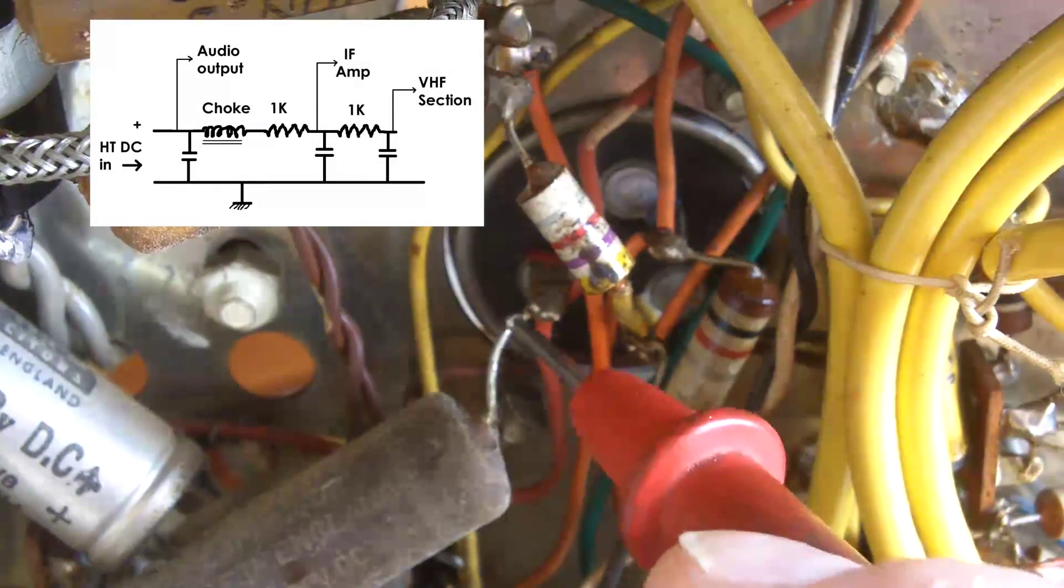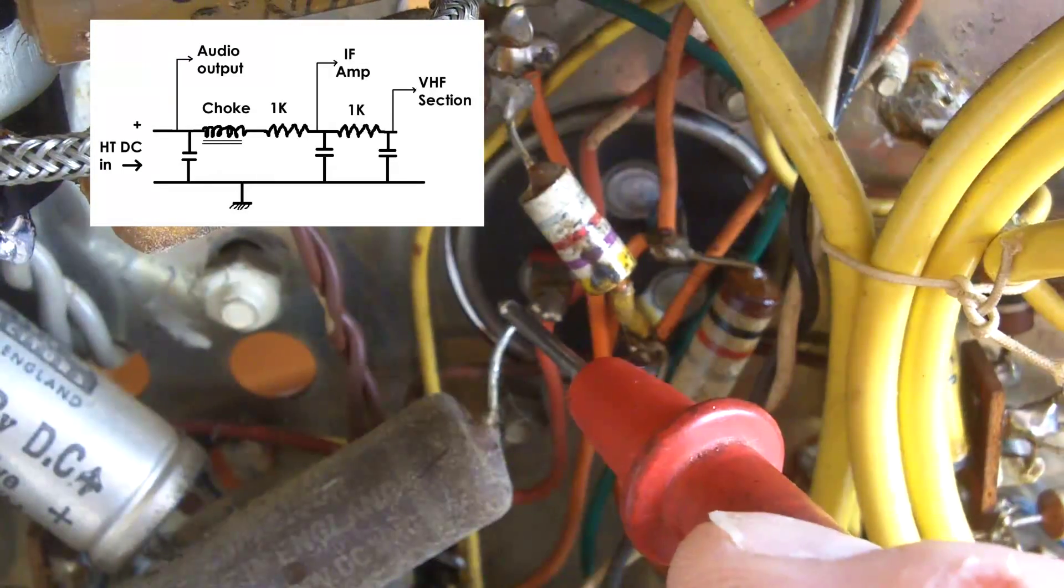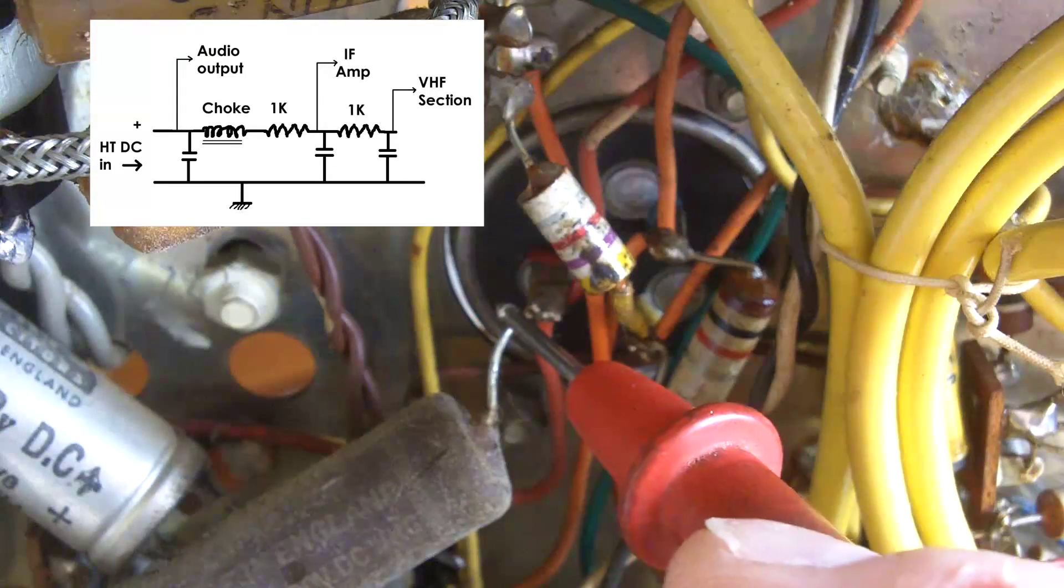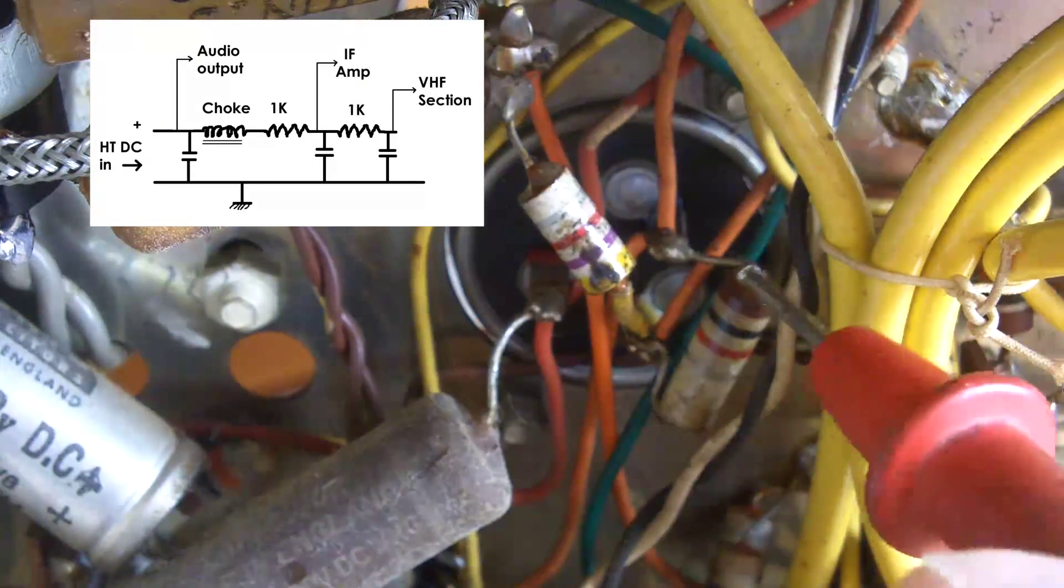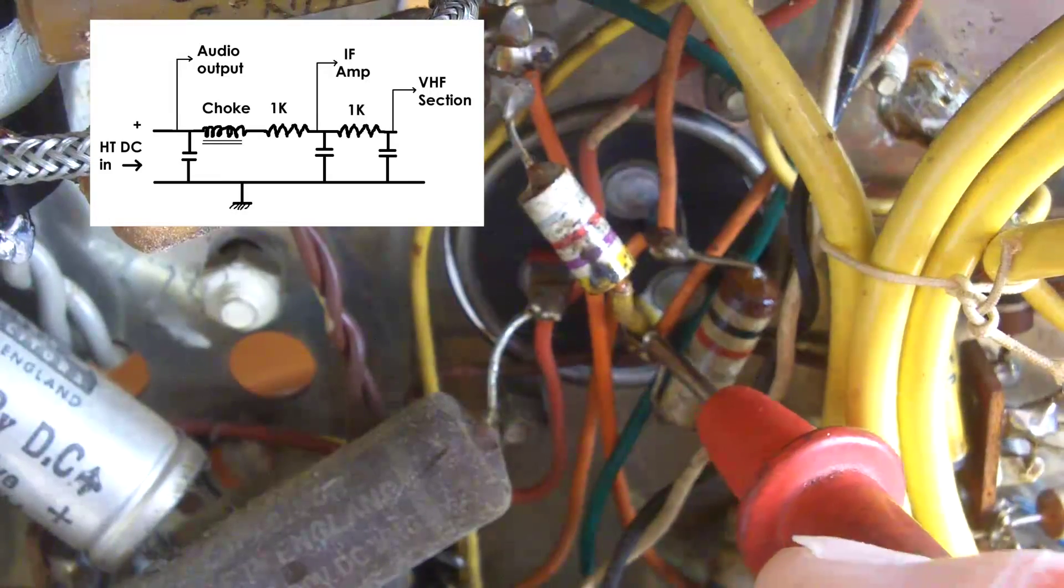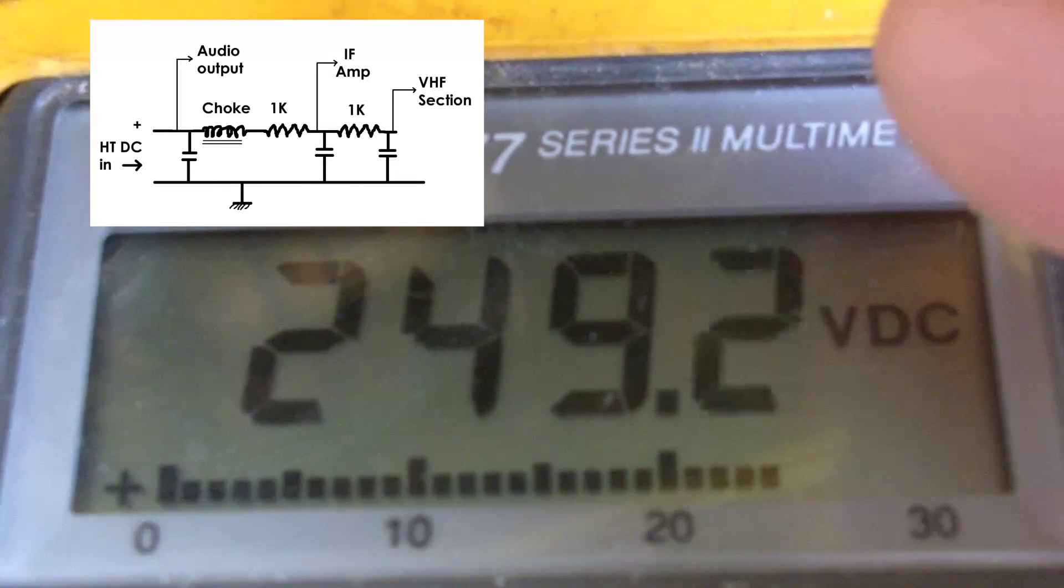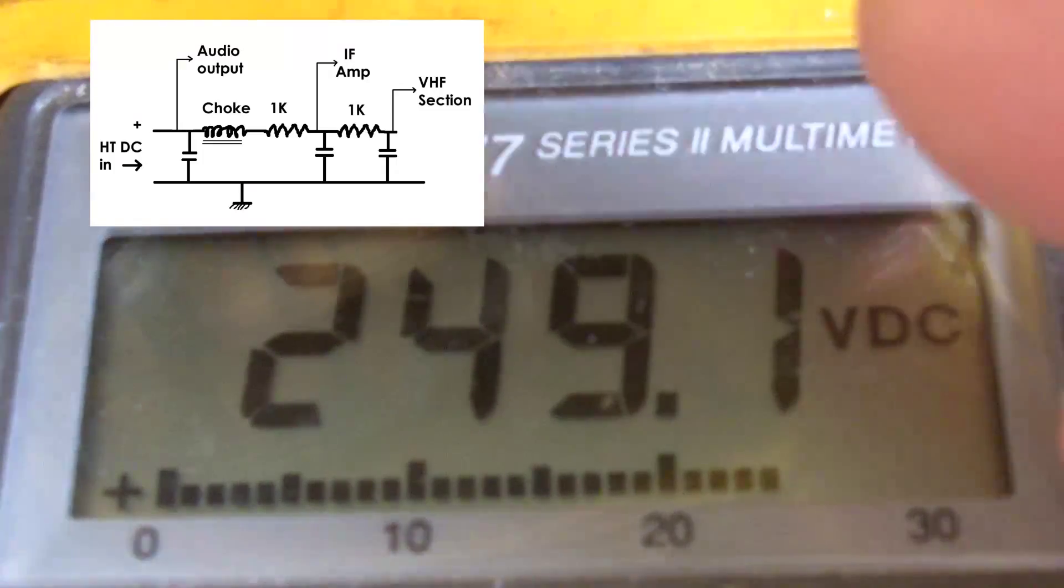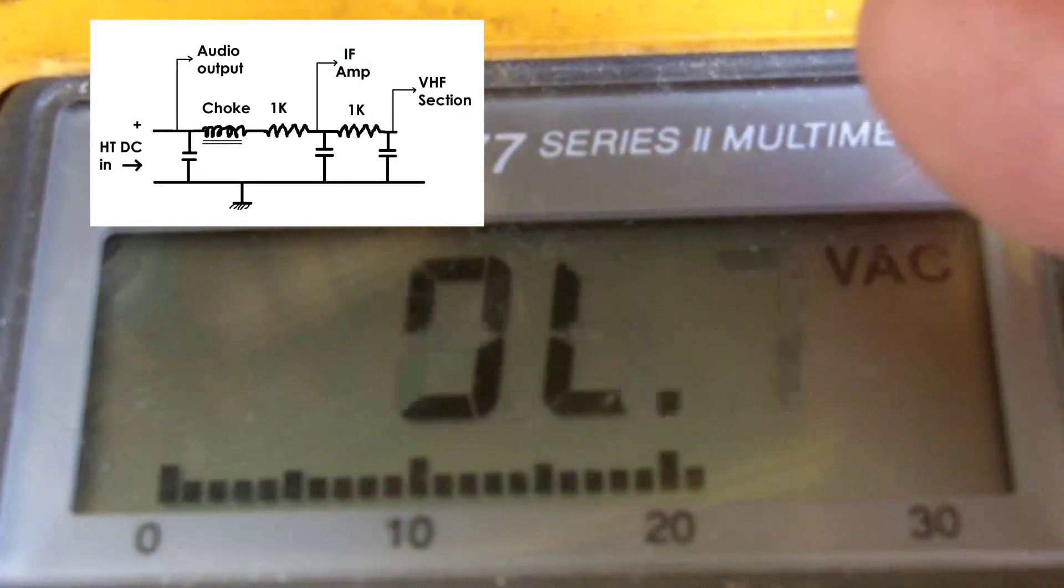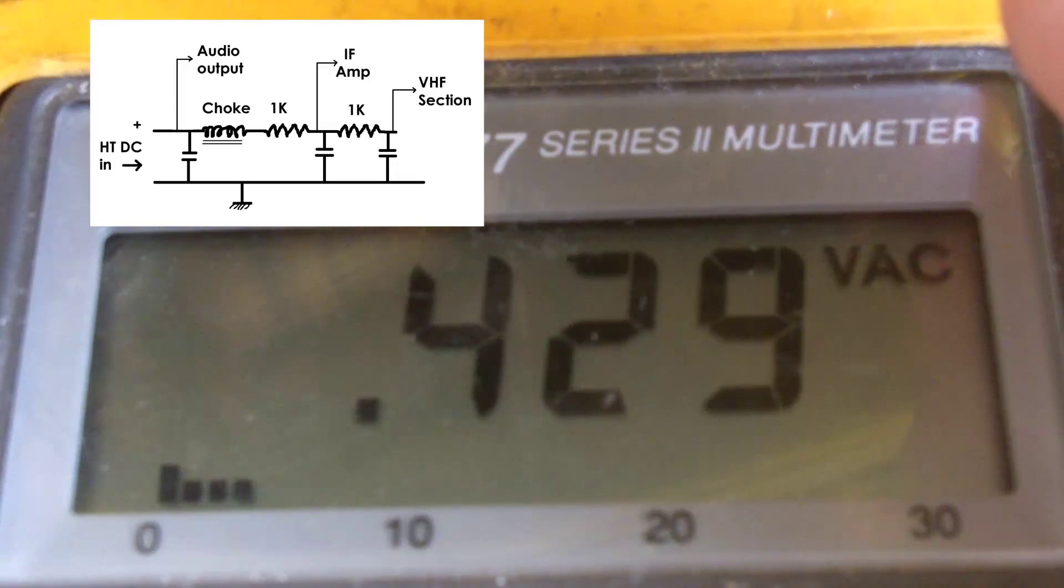You'll remember that the supply comes from this pin up to the choke that's associated with the output transformer through the 1K resistor and it comes back onto this lower pin down here. So again I've got the meter on DC and we're looking at 249 volts of DC. Again I'll switch over to AC and there we've got 0.4 volts AC ripple imposed on the DC there.